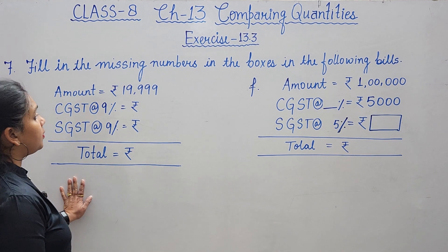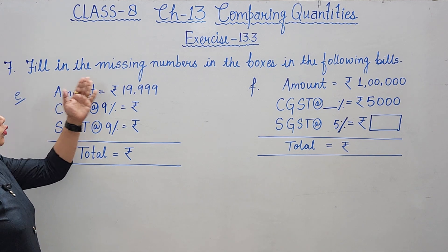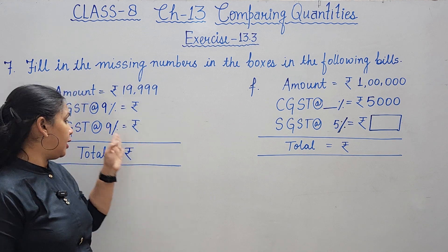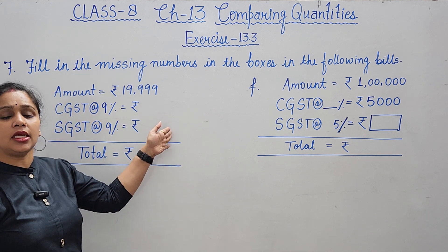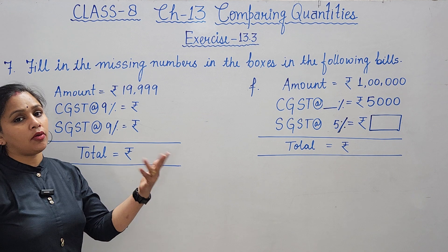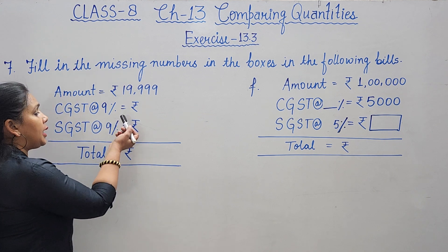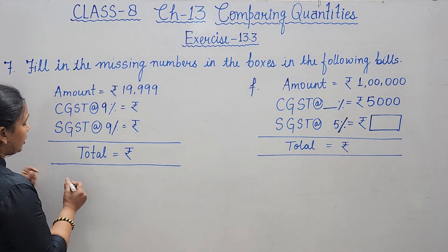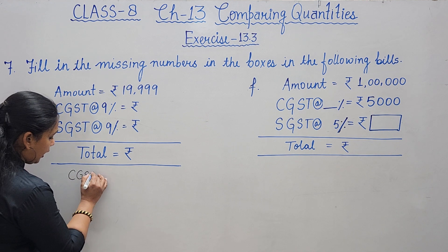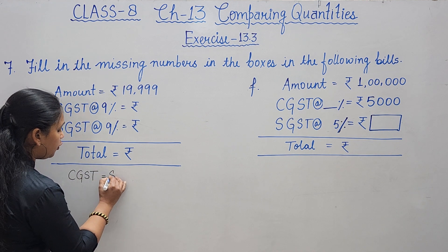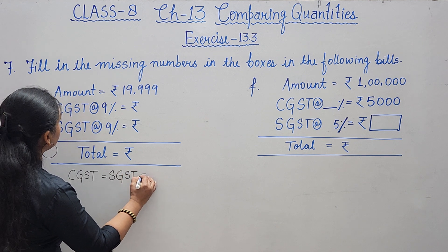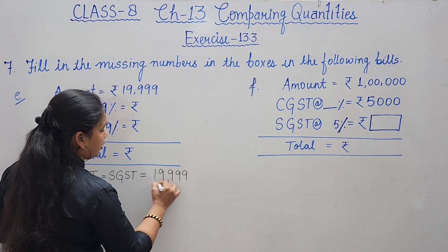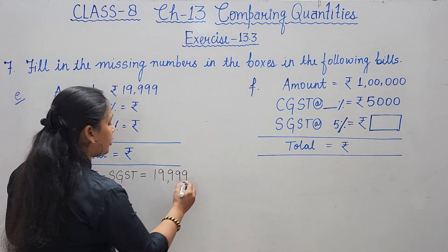Part E: amount is given as 19,999 rupees, CGST rate is 9%, SGST rate is 9%, but rupee amounts are unknown. Since both are always equal, we calculate CGST: 19,999 × 9/100.